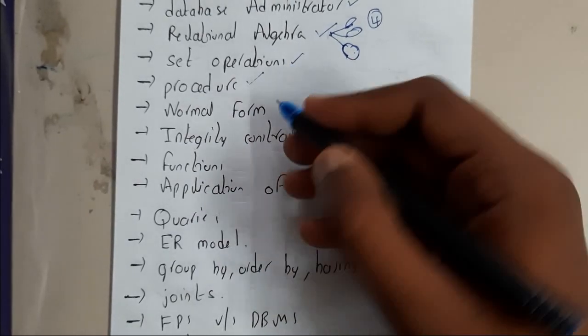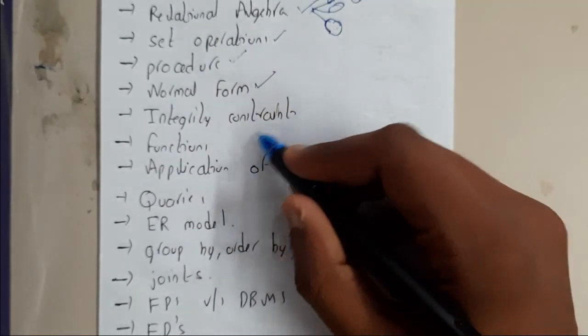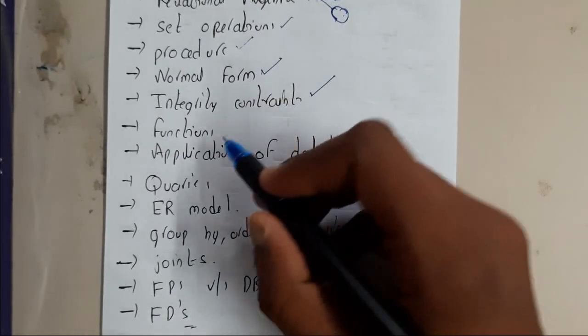He asked us what are the different types of normal forms and to explain first, second, and third normal forms. He also asked about data integrity constraints and functions.